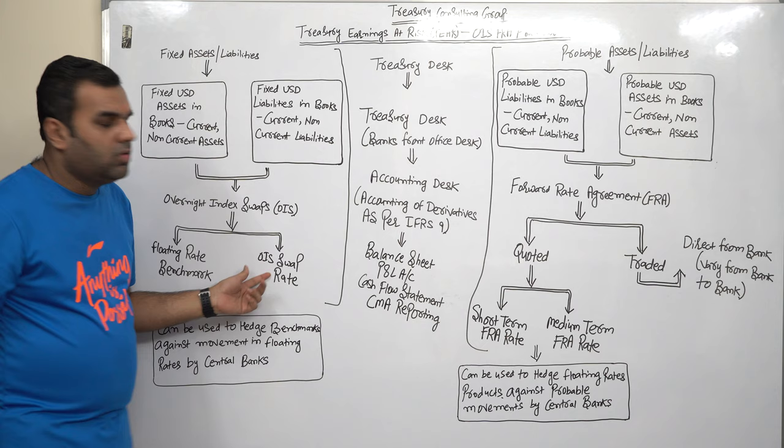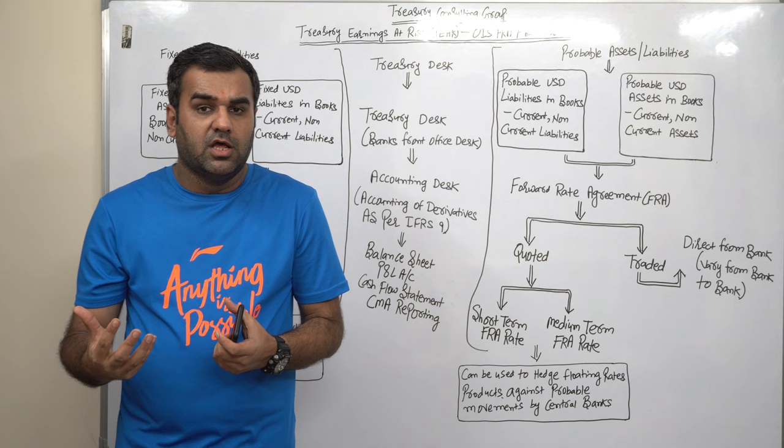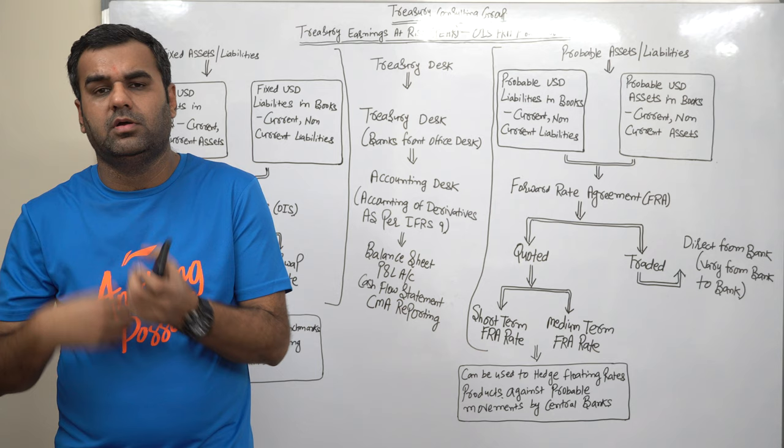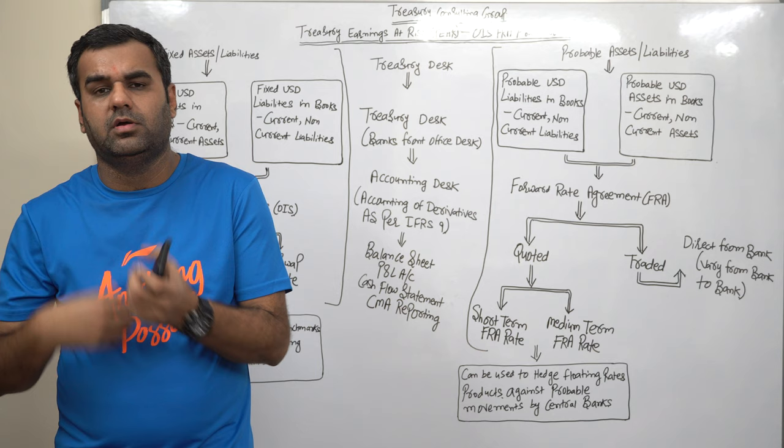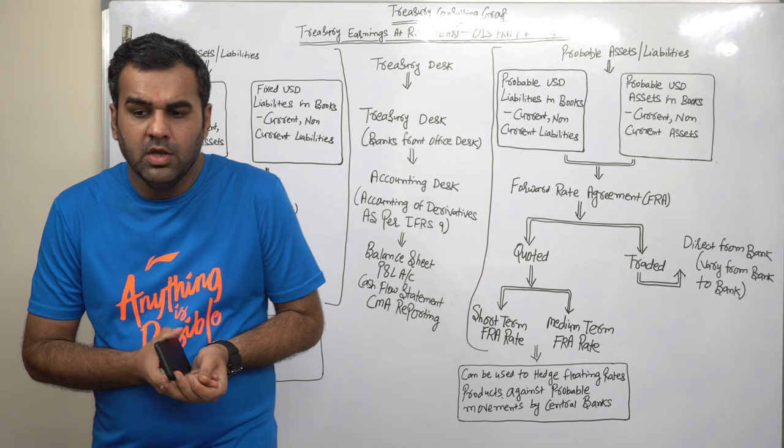Because sorry for that, whatever I have, I can take OIS. Whatever is probable, I will take FRA. I know that many people will confuse that whatever I have in the books like Amazon e-commerce.